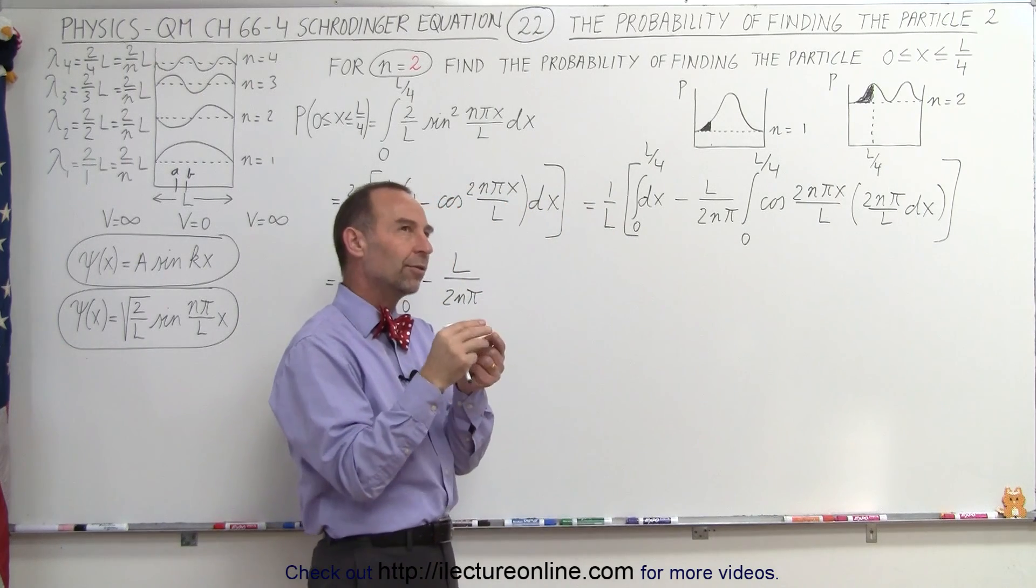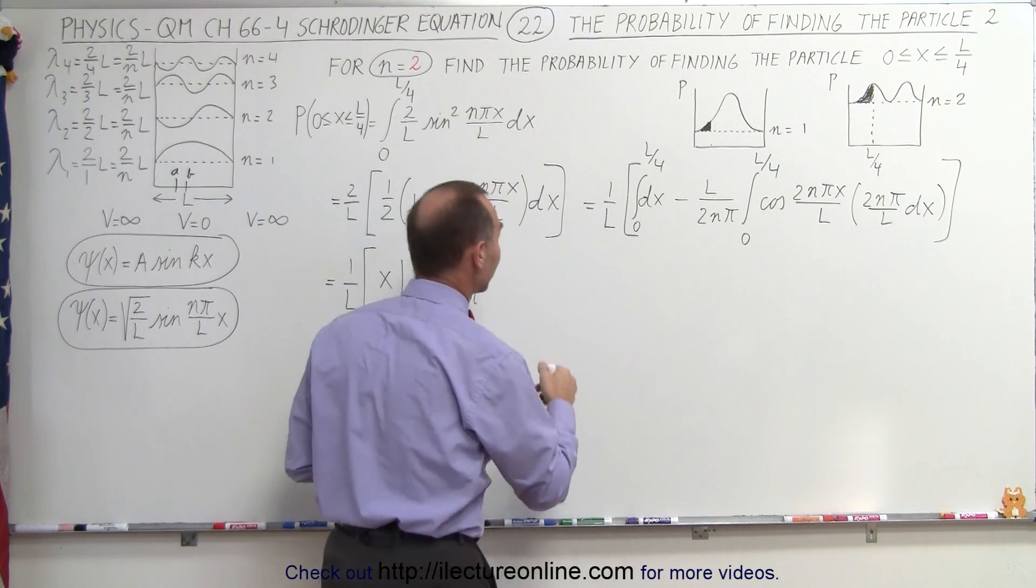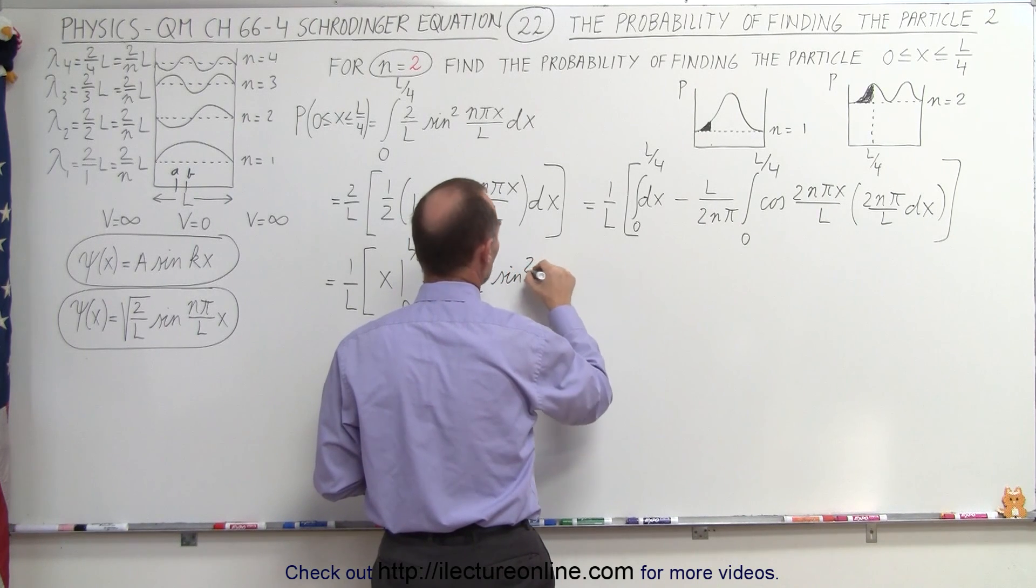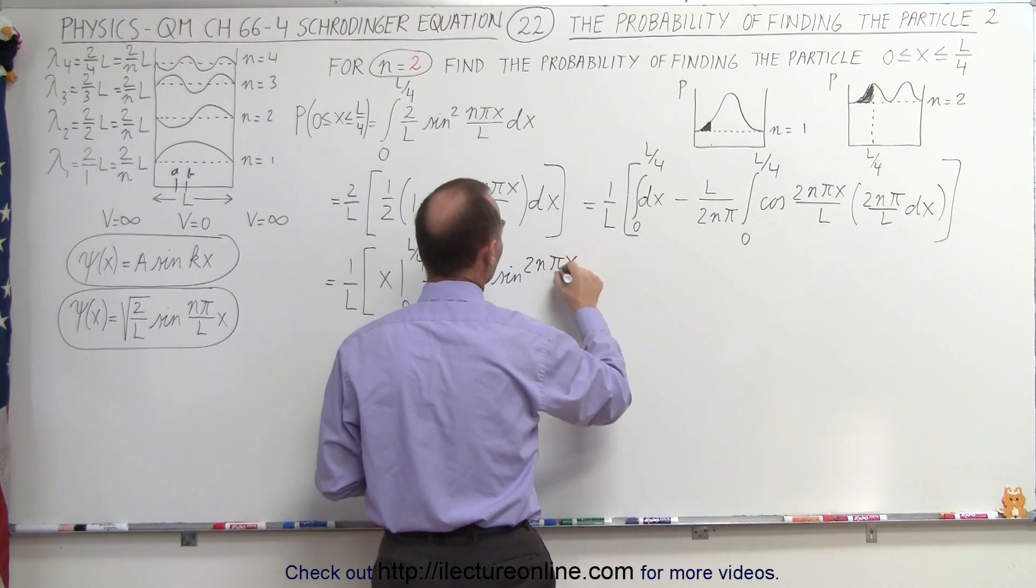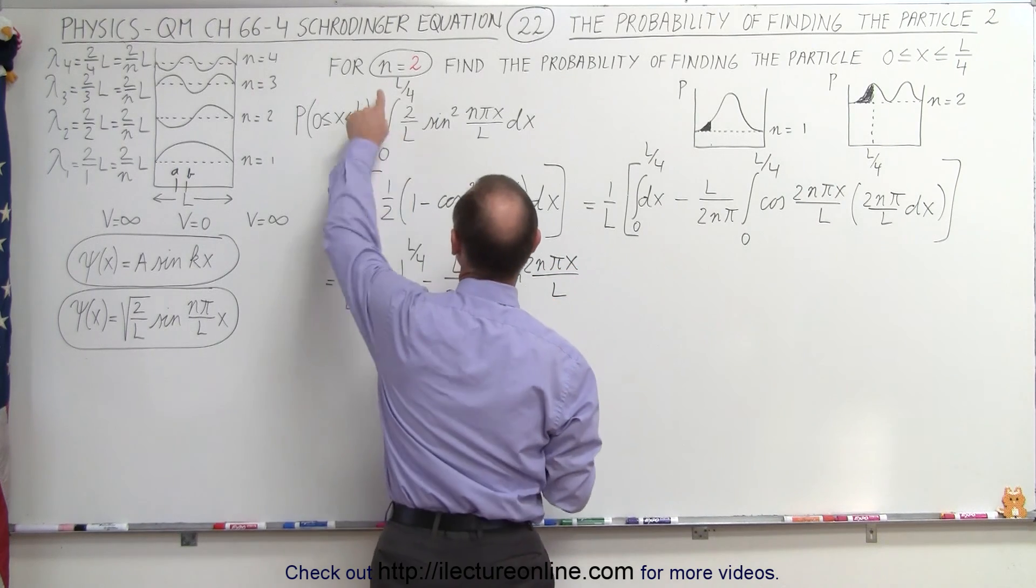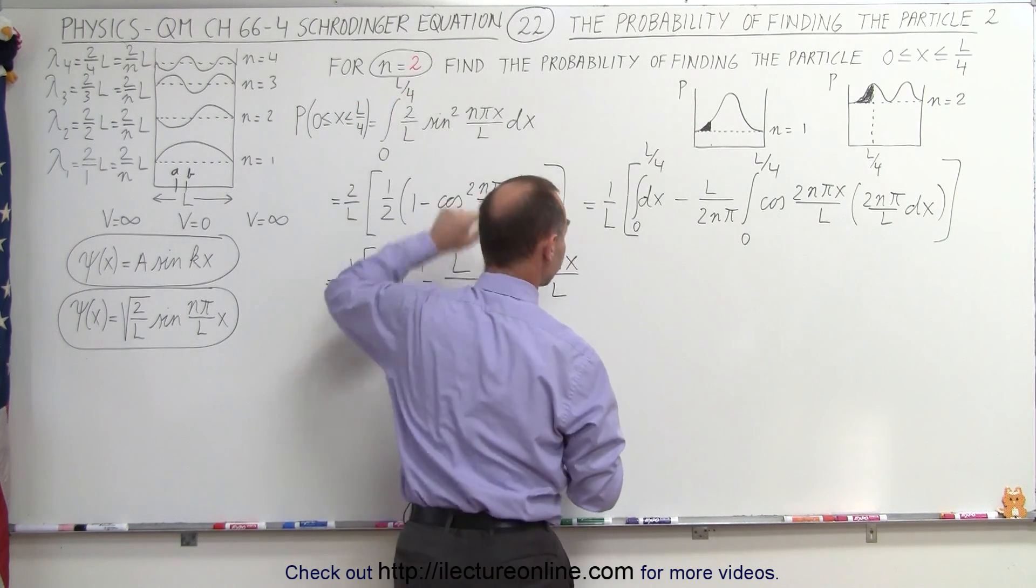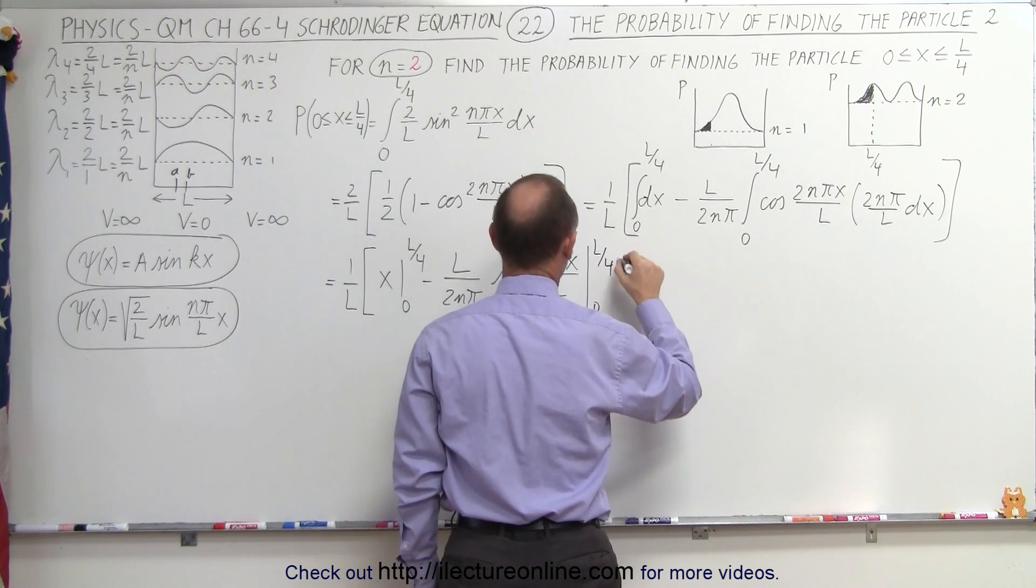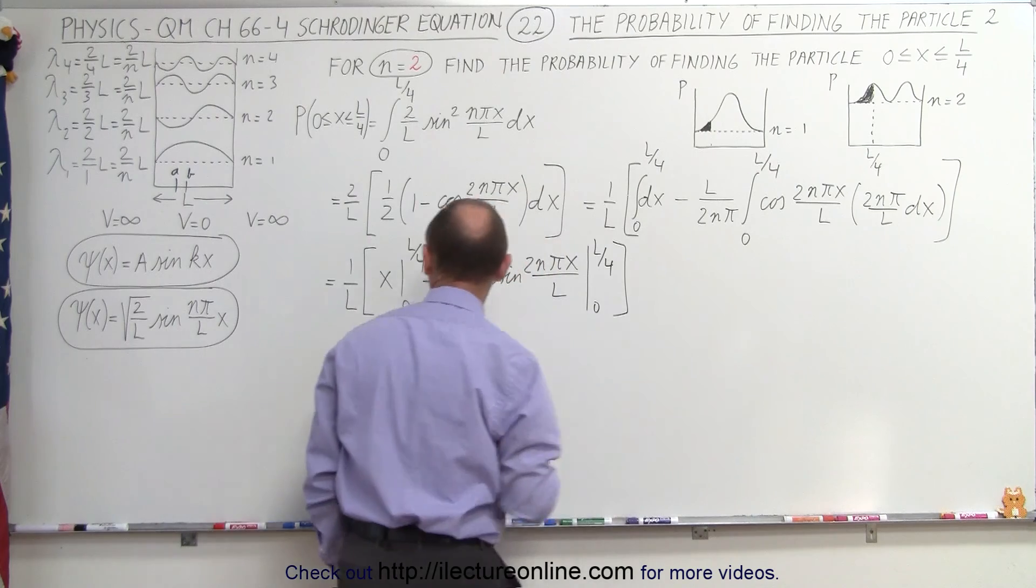The integral of the cosine is the positive sine. The derivative of the sine is the cosine, so the integral is the positive, yes. So we have the sine of 2n pi x over L. Remember that in this case, n is equal to 2. Evaluated from 0 to L over 4. Let's close the brackets here.